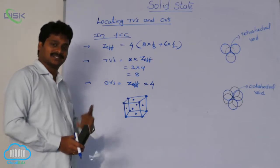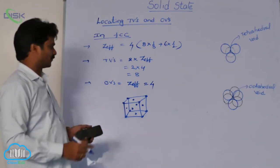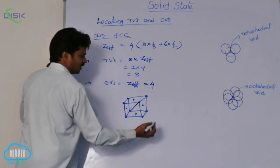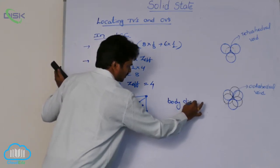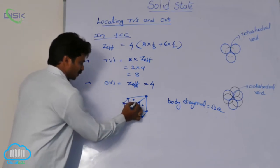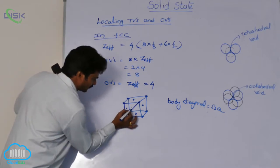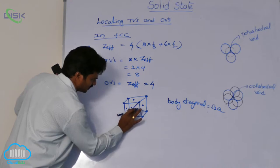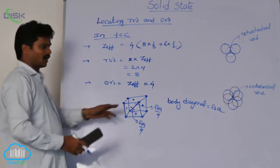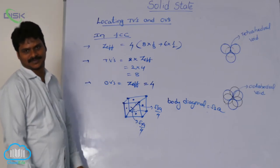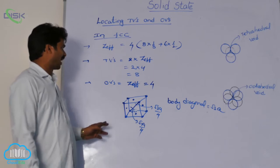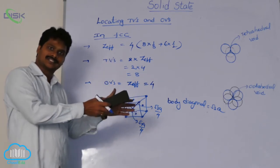Tetrahedral voids in FCC are present at one-fourth distance from the corner along the body diagonal. The body diagonal length is root 3a. At one-fourth distance from one corner, that is root 3a/4, and from the other corner also root 3a/4. Along each body diagonal there will be two tetrahedral voids. For 4 body diagonals, that gives 8 tetrahedral voids total.